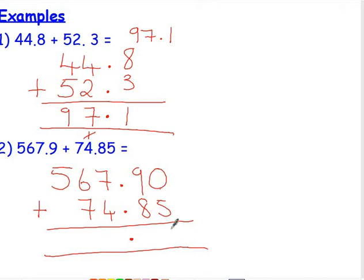0 add 5 is 5. 9 add 8 is 17, 7 down, carry 1. 7 add 4 is 11, and the one we carried is 12, so 2 down, carry 1. 6 add 7 is 13, and the one we carried is 14, 4 down, carry 1. 5 add the one we carried is 6, so our answer is 642.75.